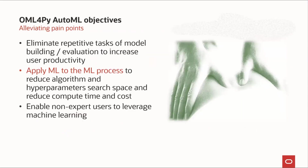Next, we'll discuss automated machine learning, or AutoML. Our objectives for OML4Py AutoML are to eliminate repetitive tasks such as model building and evaluation through automation, with the goal to increase user productivity for both expert data scientists and non-experts. AutoML applies machine learning to the machine learning process itself, using meta-learning to automatically zero in on the right algorithm, features, and algorithm settings necessary to build high-quality models without resorting to exhaustive search. Such automation helps to make machine learning more accessible to a broader audience while reducing the compute time and cost required to get the desired result.